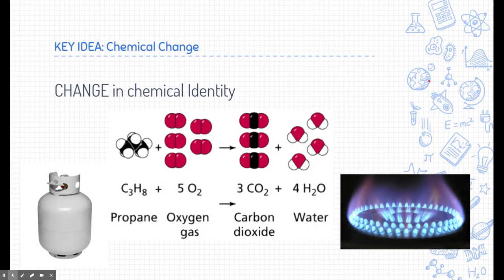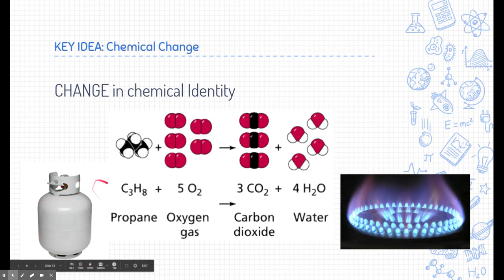A chemical change, on the other hand, changes the chemical identity of the substance. Here's propane gas. And if you mix it with oxygen, you can ignite it. This would be like in a propane barbecue grill. And it changes into carbon dioxide and water when you set it on fire.